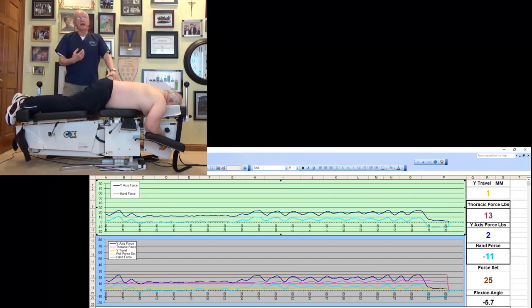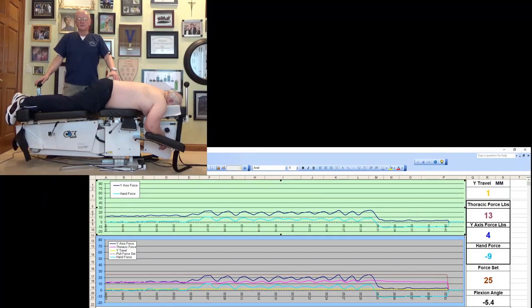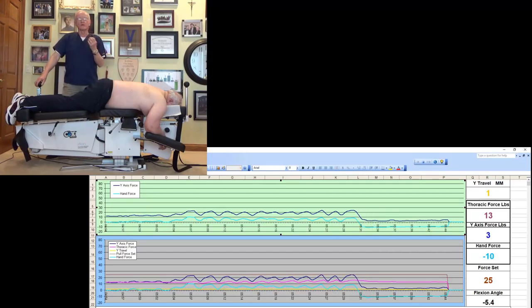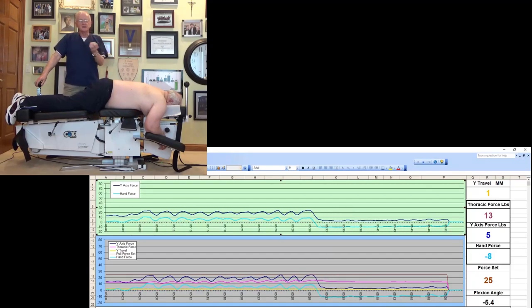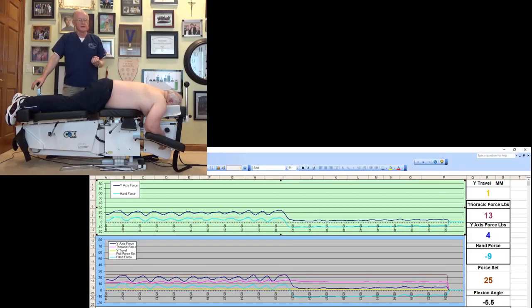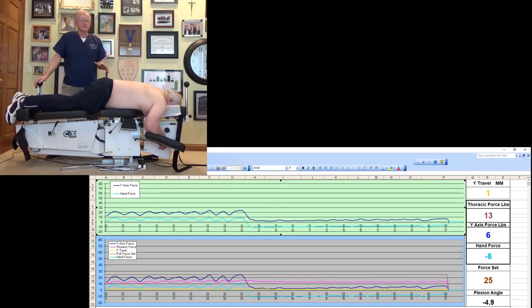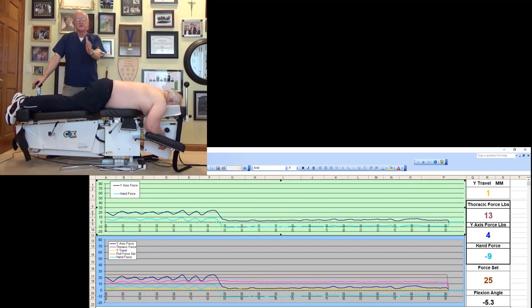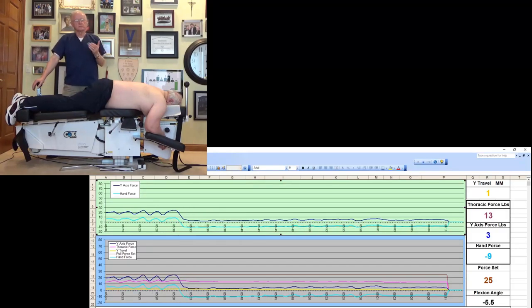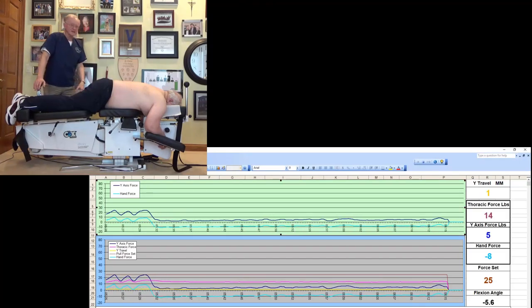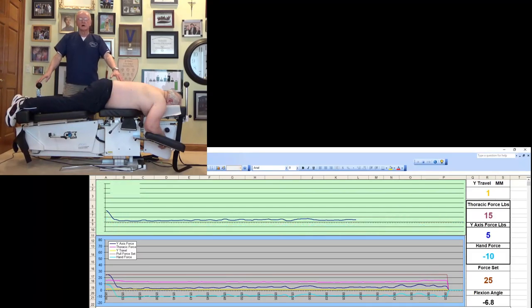I would like to take you from the manual application of this treatment to the automated distraction. Automated distraction is a much stronger force than is manual application. So we always begin treatment with a manual technique, which we just observed, so that we can tolerance test the patient. We can say, does this cause you any discomfort? And we can thereby adapt our force to the patient response. At the point at which a patient is 30 to 40% relieved, I will lock the instrument at the flexion angle of comfort to my patient and institute automated distraction.